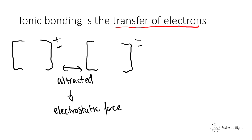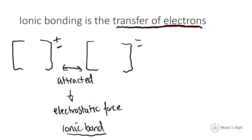They are attracted to each other by an electrostatic force. This bond is called an ionic bond because there has been a loss of an electron and a gain of an electron — a transfer of electrons causing a positive and a negative ion to be attracted to each other.